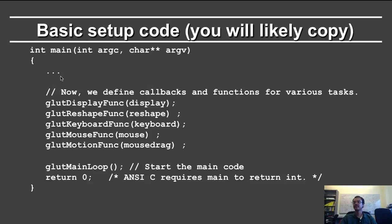This was the earlier part of the main function. Now the display function is some function known as 'display'. There's also reshape if I try to reshape my window, a keyboard callback, a mouse press callback, and also a mouse drag callback. After this, you go to glut_main_loop. All this does is wait for events such as moving the mouse or pressing the keyboard, and then it calls the user function.